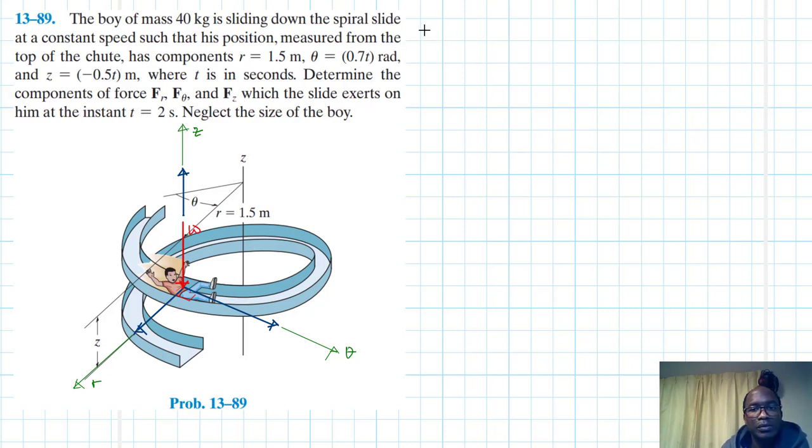Let's write down the components. We have r equal to 1.5, therefore r dot is equal to 0 and r double dot is equal to 0. We have theta equal to 0.7t, and theta dot is equal to 0.7, and theta double dot is equal to 0. Then we have z equal to minus 0.5t, and z dot is equal to minus 0.5, and z double dot is equal to 0.